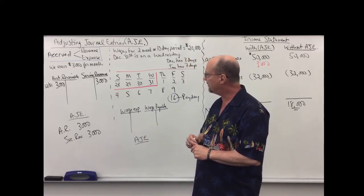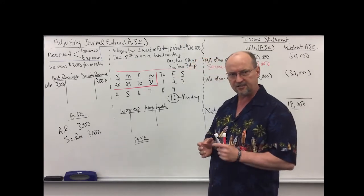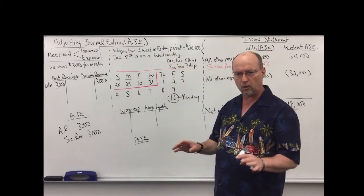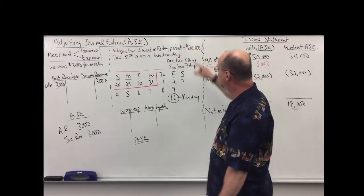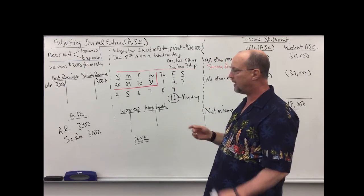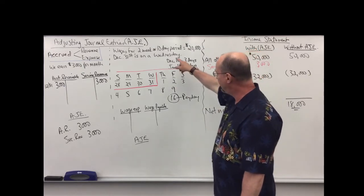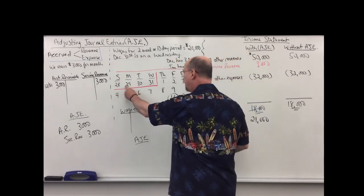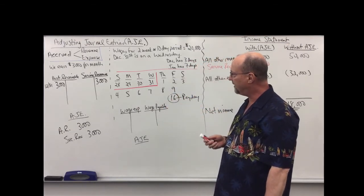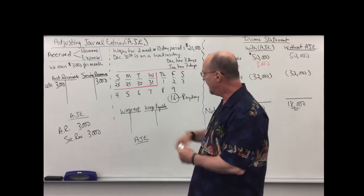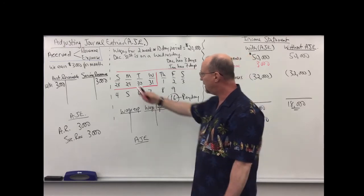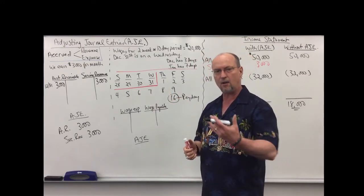For our accrued expense, we're going to look at payroll. We're going to assume it's a two-week or 10-day pay period with no overtime and no weekend work. Gross payroll for all employees collectively for that 10-day period is $20,000, or $2,000 per day. Let's assume that December 31st falls on a Wednesday. So my 10-day period is from December 29th to January 9th, and payday is the following Friday. At the end of the month we have to accrue wages for three days: the 29th, 30th, and 31st. $20,000 divided by 10 days is $2,000 per day, so we have to accrue $6,000 of wages.